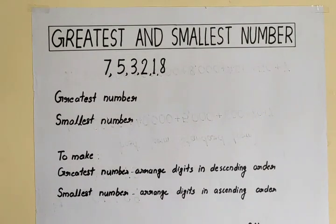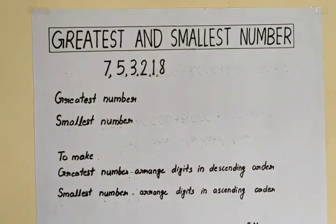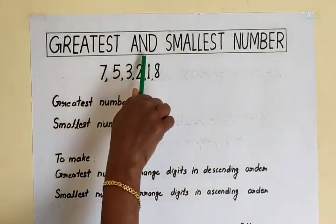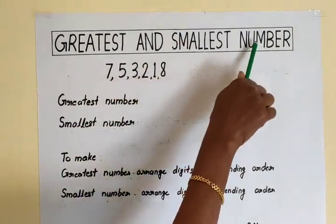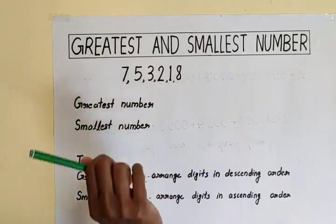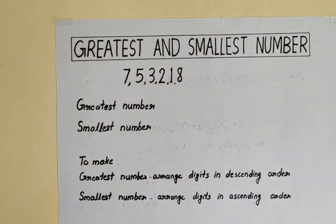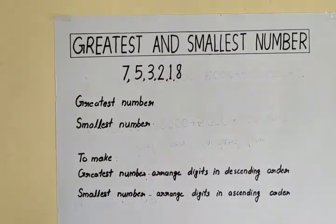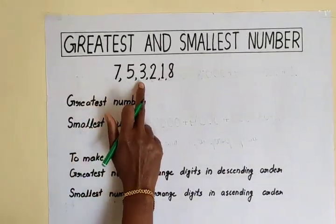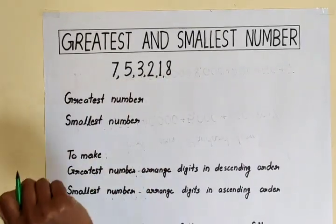Hi dears. In today's session, you will learn how to write the greatest and smallest number using these 6 digits. Here we have 6 digits: 7, 5, 3, 2, 1, 8.